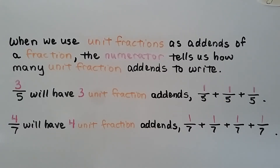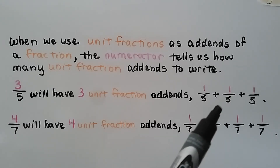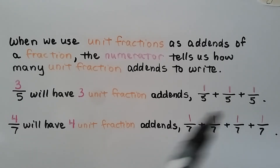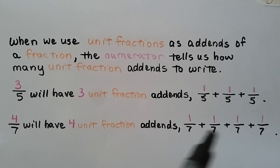When we use unit fractions as addends of a fraction, the numerator tells us how many unit fraction addends to write. 3 fifths will have 3 unit fraction addends: 1 fifth plus 1 fifth plus 1 fifth. 4 sevenths has a 4, so we will have 4 unit fraction addends — 4 of the unit fraction 1 seventh.